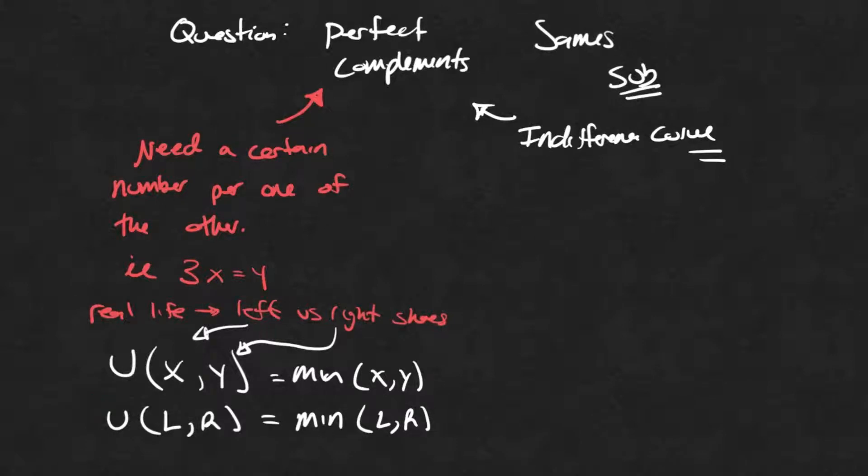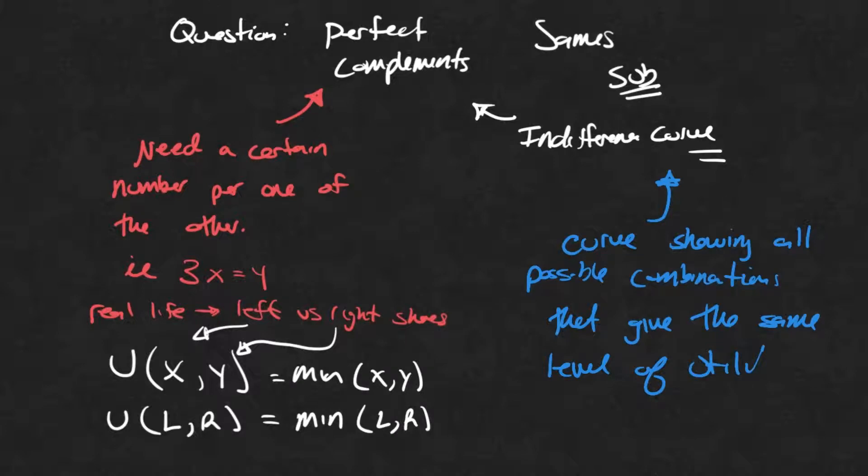So by definition, a perfect complement, what we care about with perfect complements, is that there's a certain number per one of the other. So like left and right shoes. So how do we draw an indifference curve? Well, let's just do a quick recap of what is an indifference curve. It's just a curve showing all possible combinations that give the same level of utility.